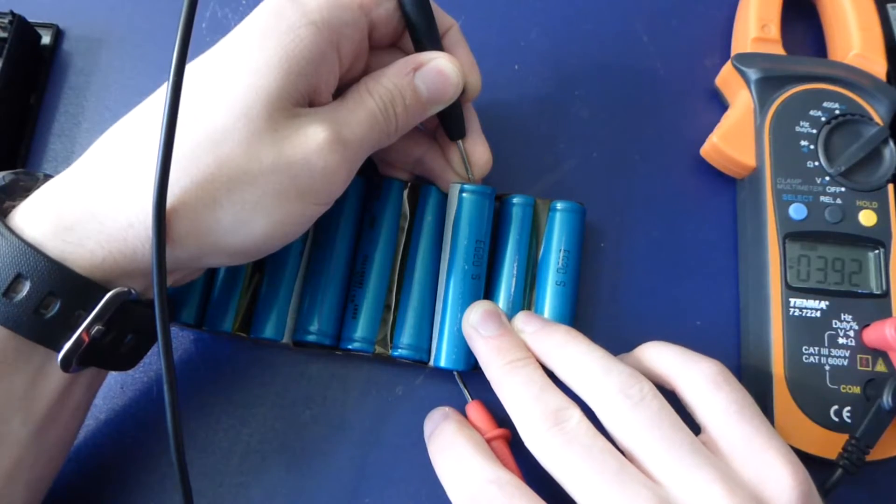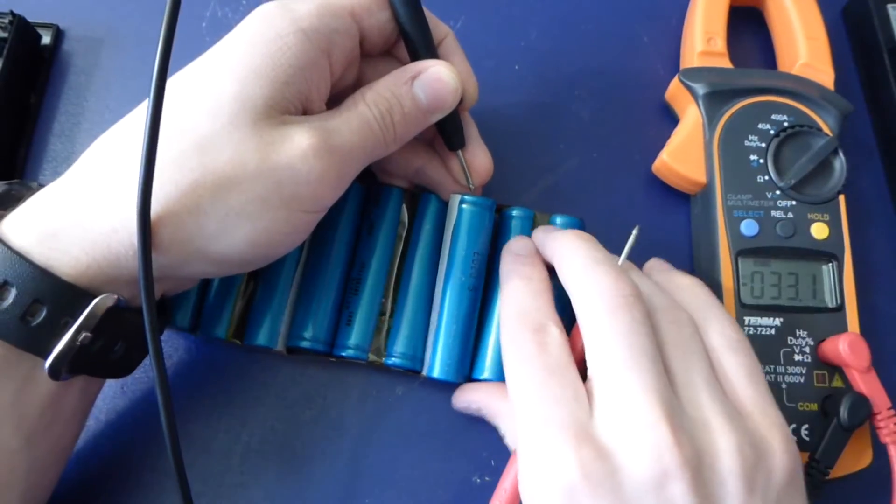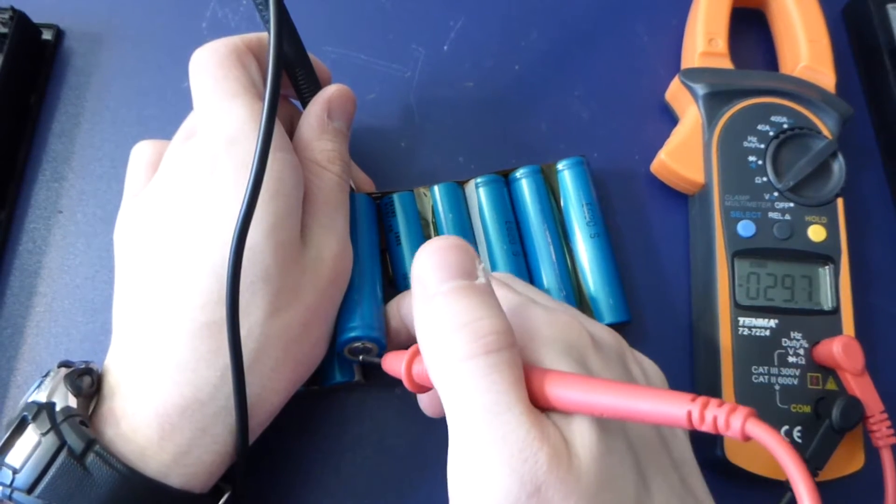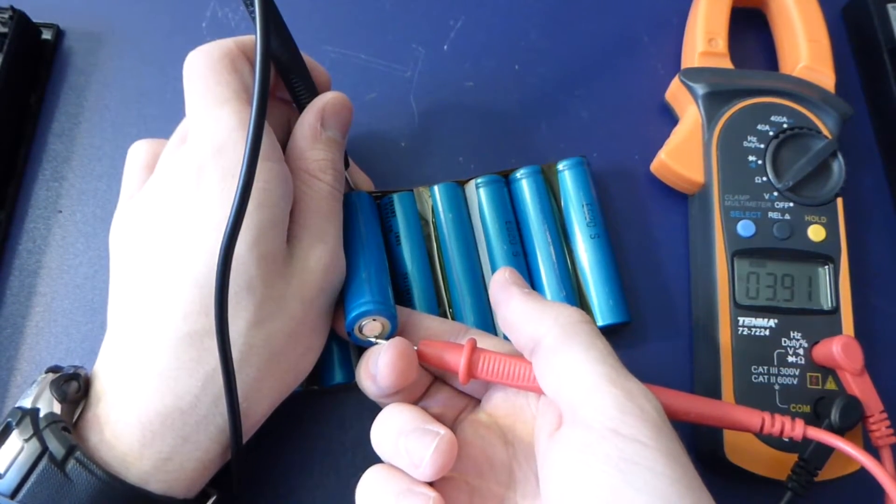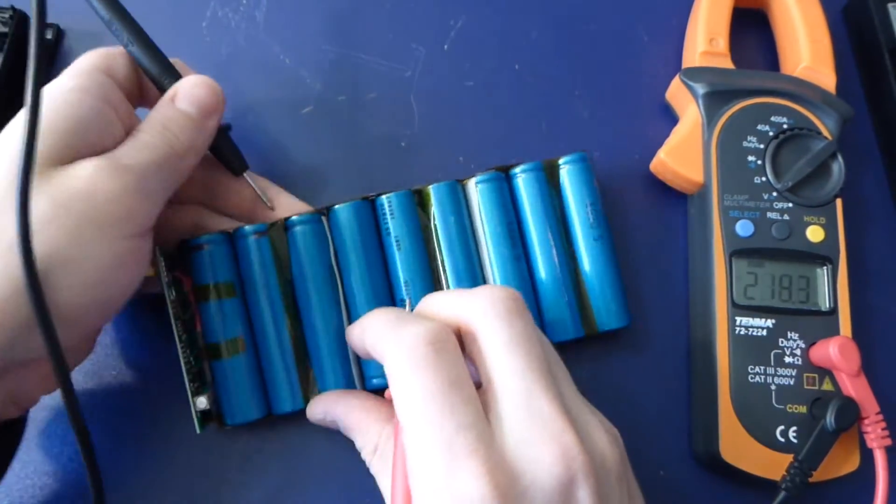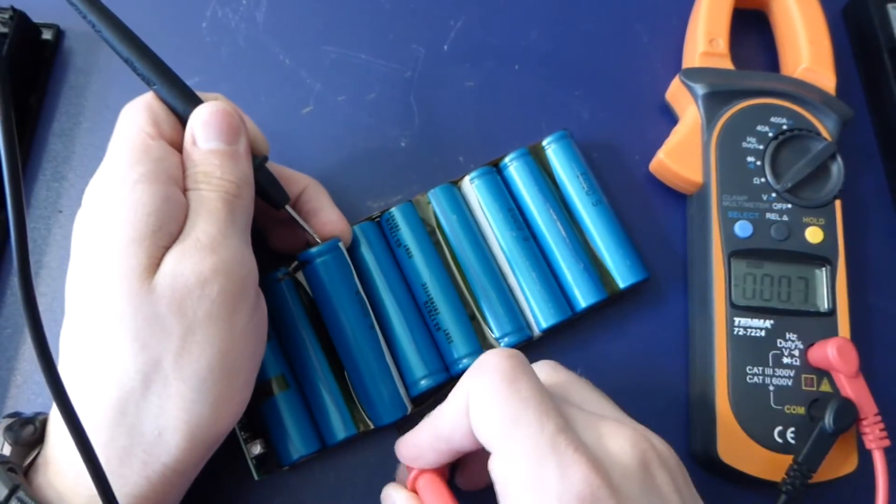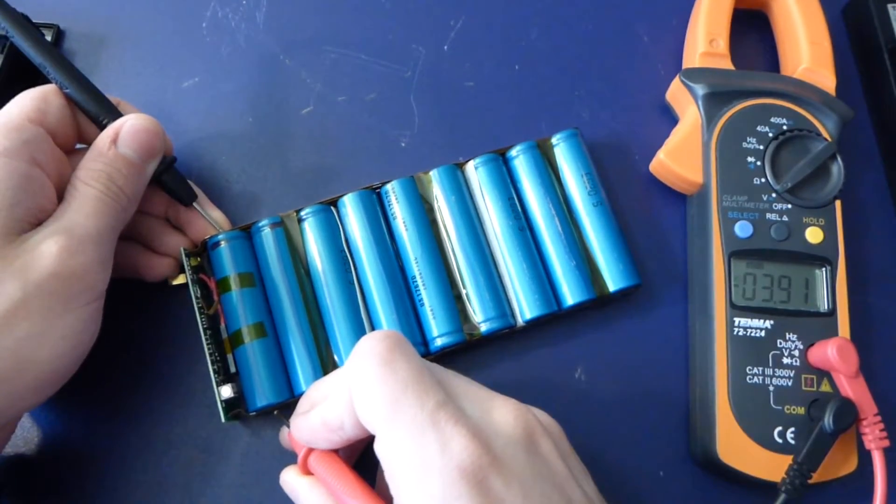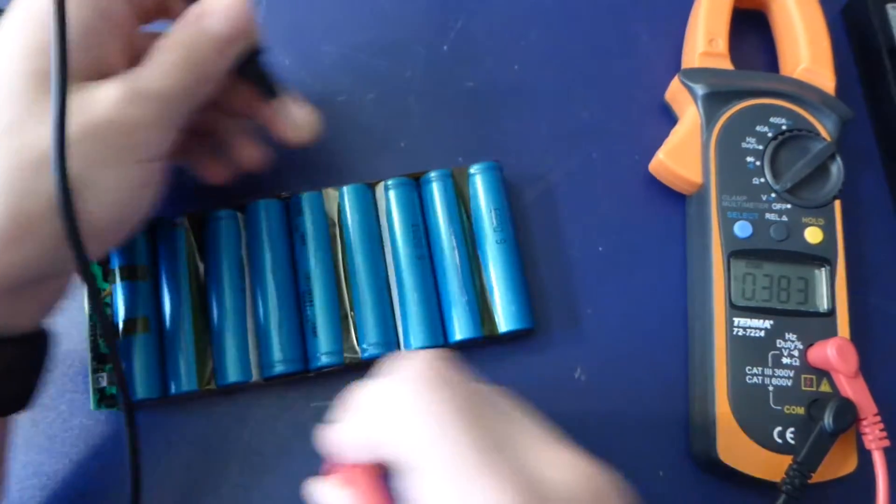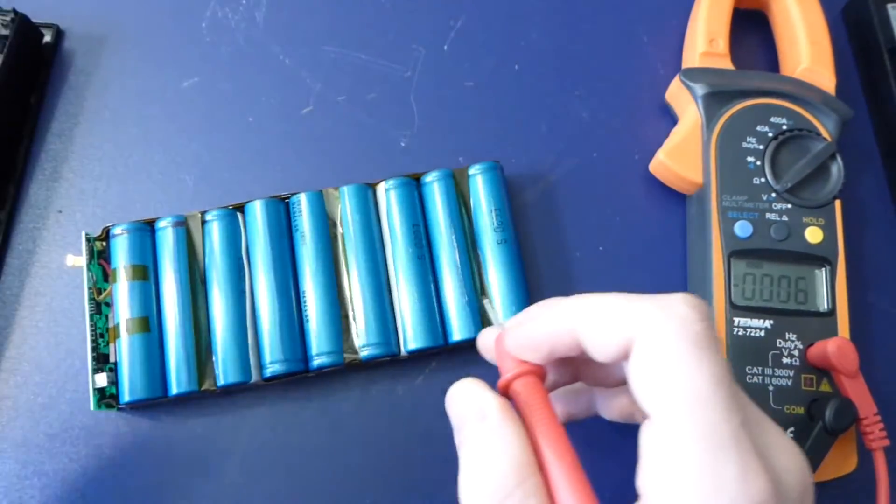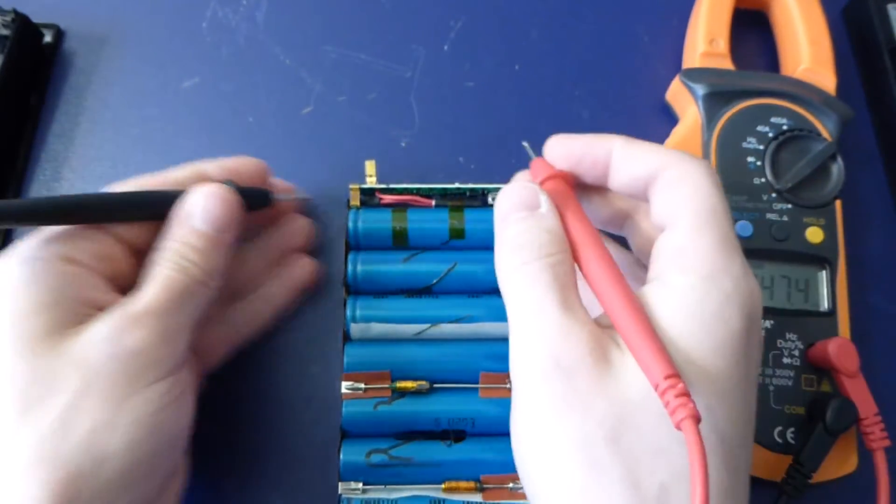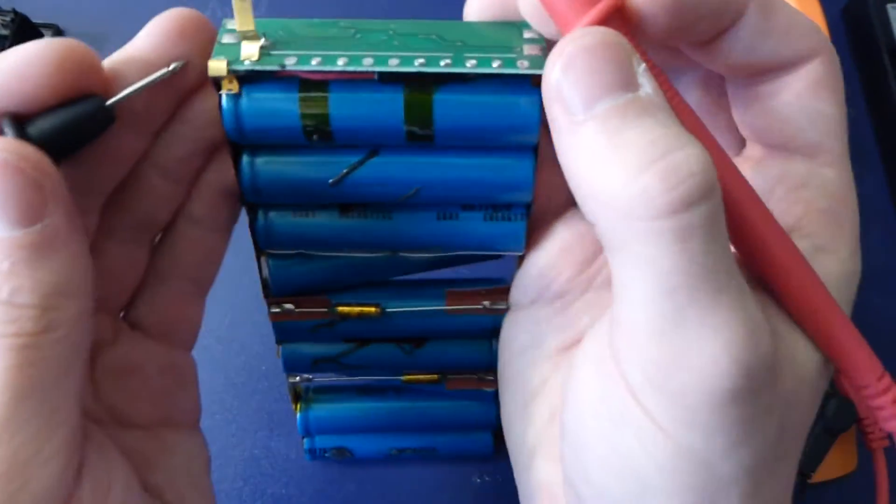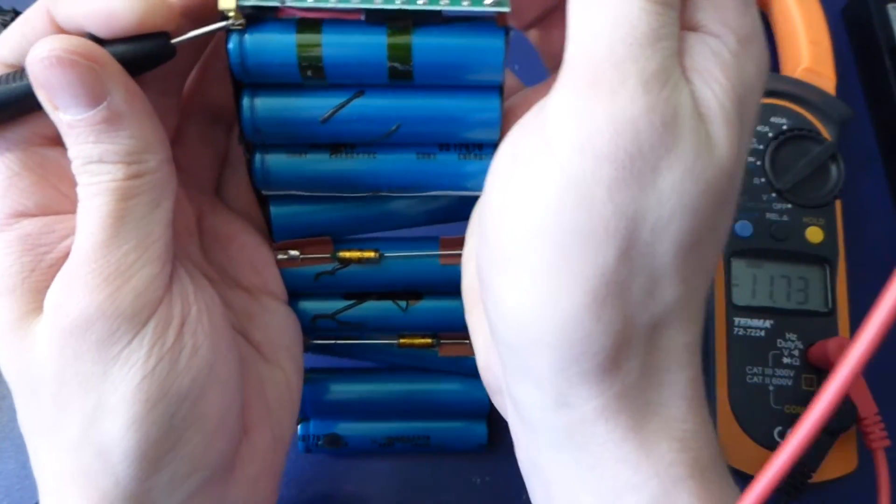3.9 volts - that's not bad for what should be a 3.7 volt lithium. This one is 3.9 again, and this one I think I just broke, but it's 3.9 again. So across this bank is 3.9, across this bank is 3.9, across this bank is 3.9.